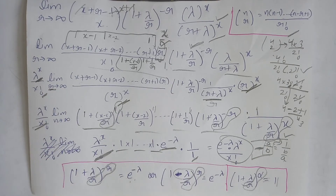We have successfully derived the Poisson distribution from the negative binomial distribution. Thanks for watching our video — if you like our videos, please subscribe to our channel.